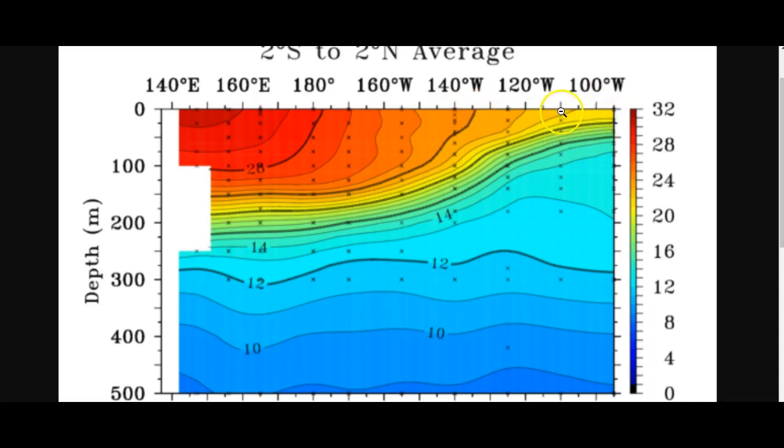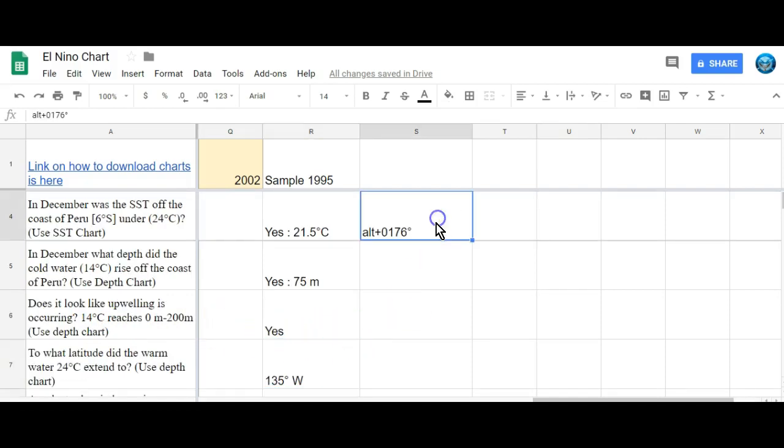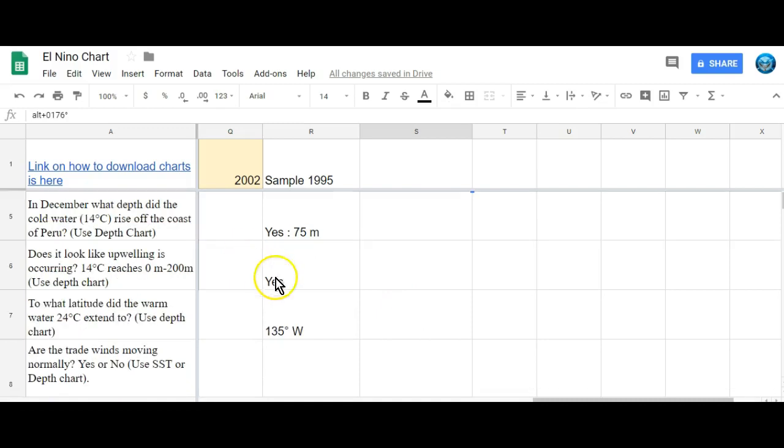So you have to figure out the latitude. So that's 100 west. That would be 110 west, 120 west, 130 west. That's 140 west. So I would say that's 135 west. So coming over here, I would say that the 24 degree line, again, using the depth chart, it extended to 135 degrees west. Again, that little degree symbol, make sure you're using the ALT 0176 key.